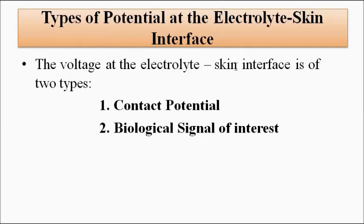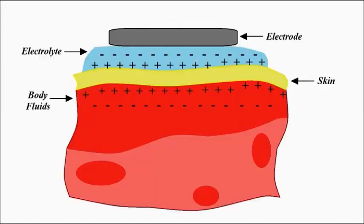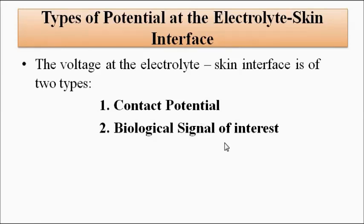The voltage at the electrolyte-skin interface presents two signals to the electrode. One is the contact potential — the electric potential of non-physiological origin because of this charge separation. The second is the biomedical signal of interest, be it ECG, EEG, EMG, or any type of signal we want to measure. If the contact potential value is high, it can mask the original biological signal of interest. Our objective is to keep this contact potential at a low value, and proper signal conditioning and processing is required to remove it.